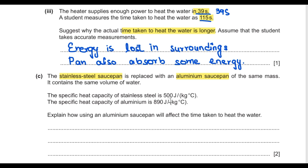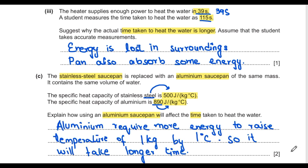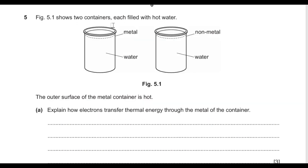Part c: the stainless steel saucepan is replaced by an aluminium saucepan of the same mass with the same volume of water. The specific heat capacity of steel is 500 J/kg°C and of aluminium is 890 J/kg°C. Aluminium requires more energy per kg per degree celsius, so it takes a longer time to heat up.